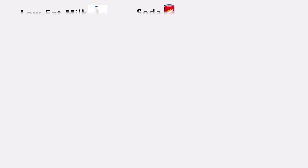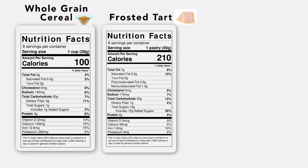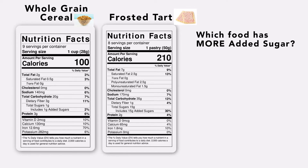Now let's take a look at these two labels. On the left is an individual whole grain cereal label and on the right we see a roasted tart label. Which of these two labels has more added sugar? Which food has more fiber?